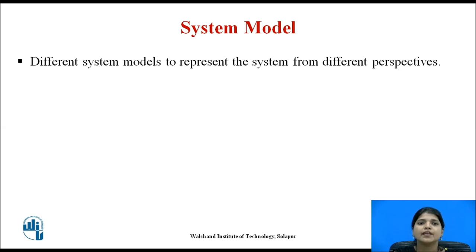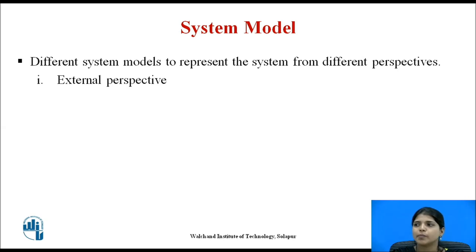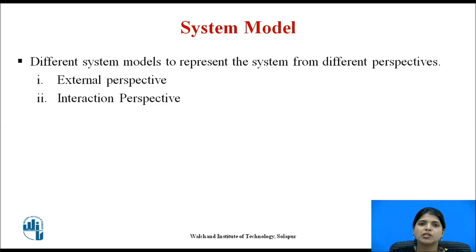We see different system models to represent the system from different perspectives. There are four perspectives. First, external perspective, where you model the context or environment of the system. Then, interaction perspective means the interactions between a system and its environment, or between the components of a system.